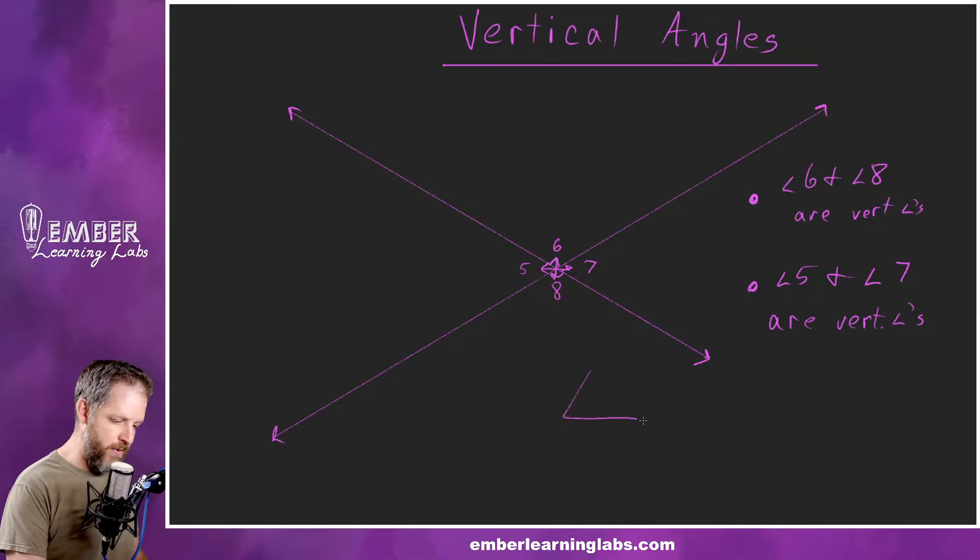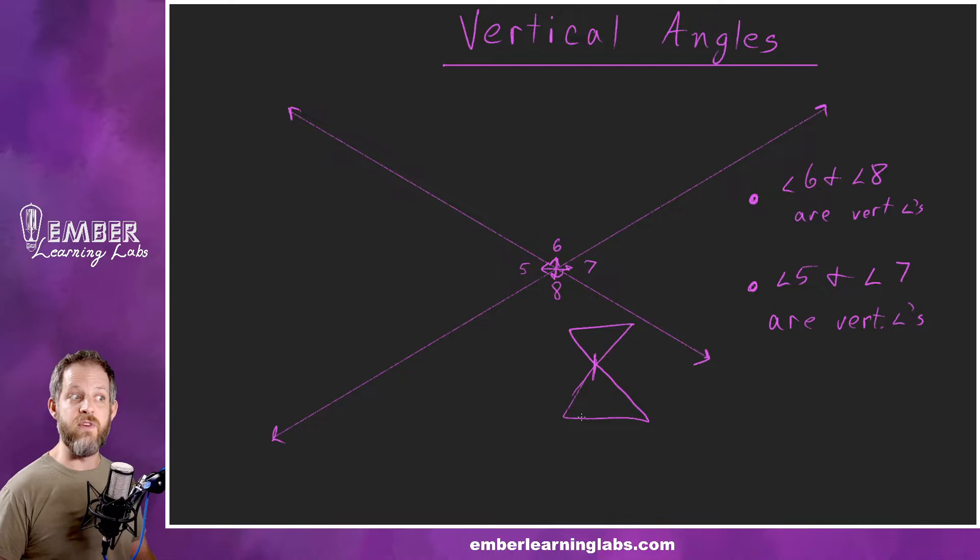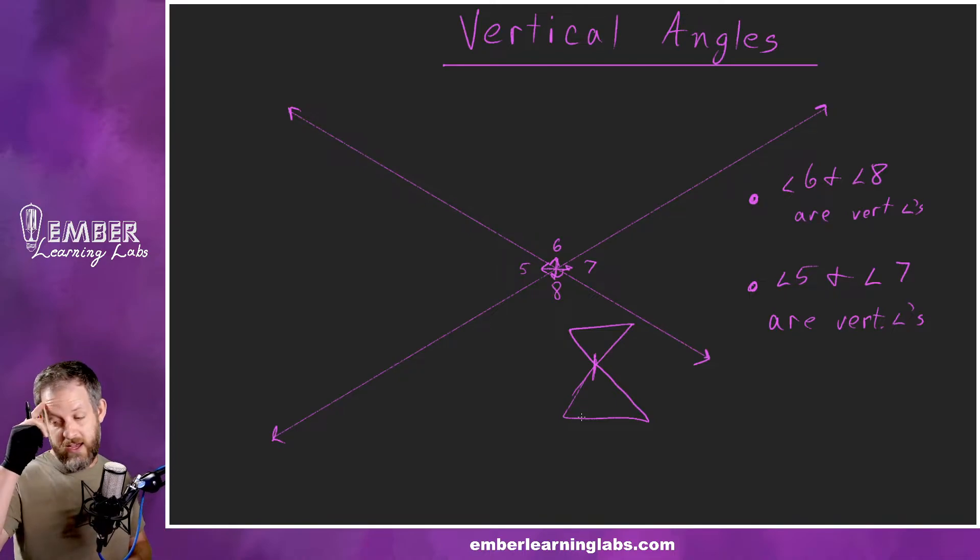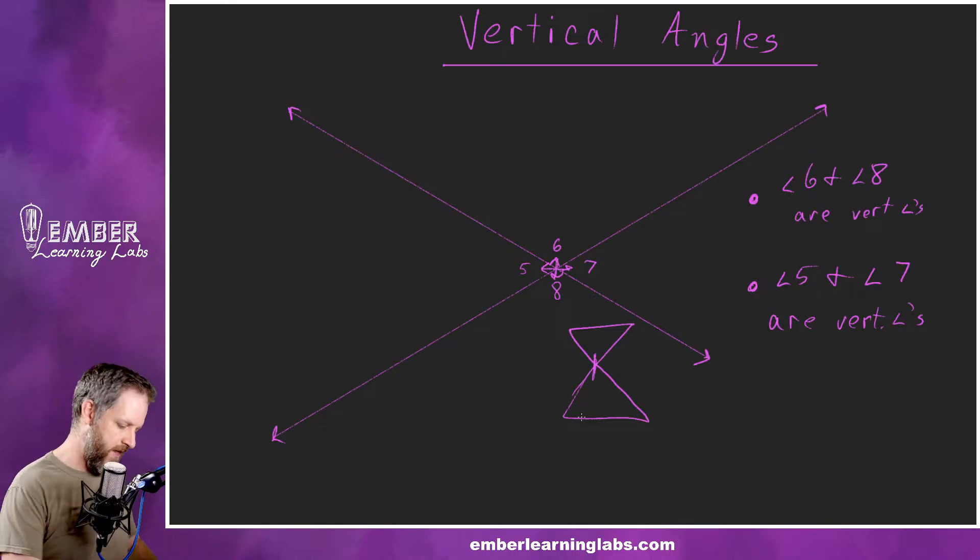They're basically angles that are crossed from each other on these points. So if we have a couple of triangles like this, which we're going to see a lot later, these angles are vertical angles, which is very important for when we start talking about congruent triangles and all kinds of things like that.